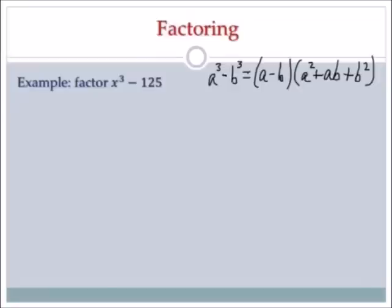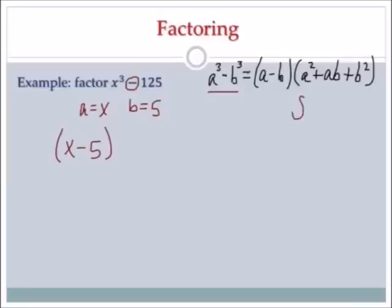Hi, it's me, Mr. B. Let's factor x cubed minus 125 using difference of two cubes. I'm given the formula at the top of the screen, and x cubed minus 125 is in the form a cubed minus b cubed. Let's find a: a is what I cube to get x cubed, which is x. b is what I cube to get 125, which is 5. Now I plug it into the formula: (a minus b) gives (x minus 5) — that's a minus because my original sign was a minus. Remember SOAP. Then a squared is x squared. The next sign is opposite the first, which is going to be a plus. a times b is 5x.